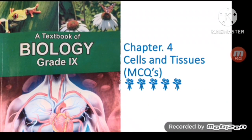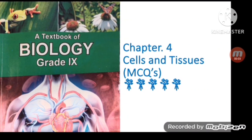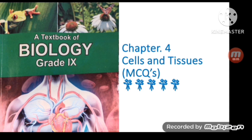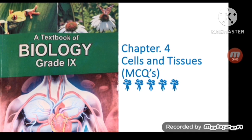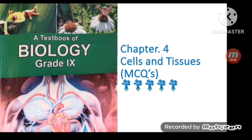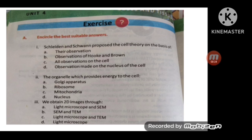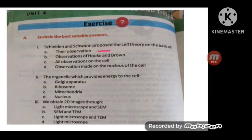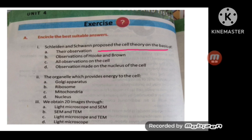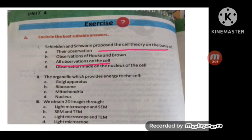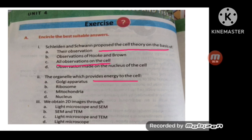Assalamu Alaikum dear students, I hope you are doing well. Today I am going to discuss MCQs of Chapter Number 4, which is Cell and Tissues. MCQ number one: Schleiden and Schwann proposed the cell theory on the basis of their observations on cells. MCQ number two: the organelle which provides energy to the cell is mitochondria.